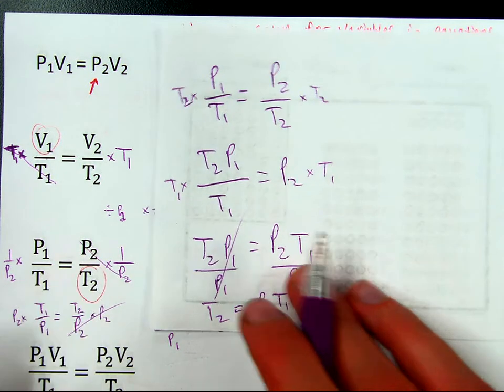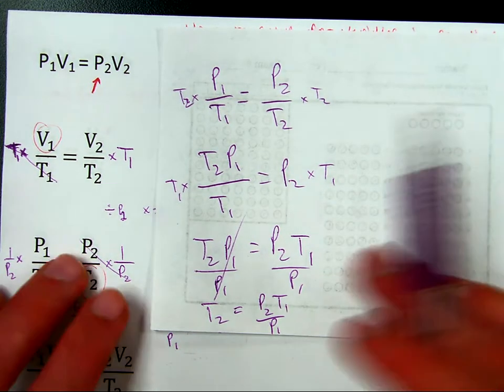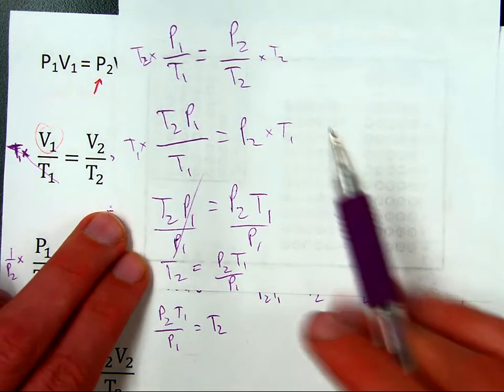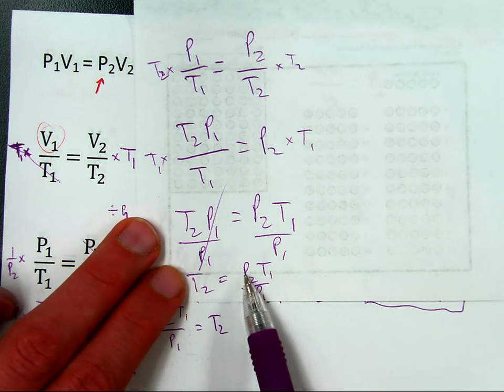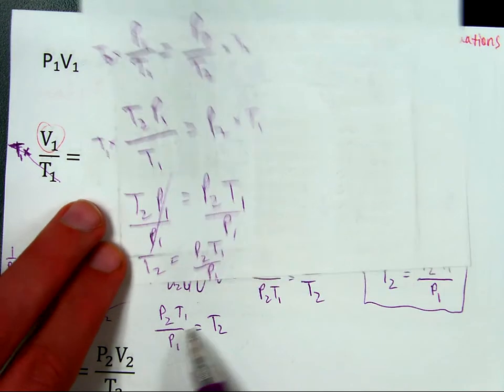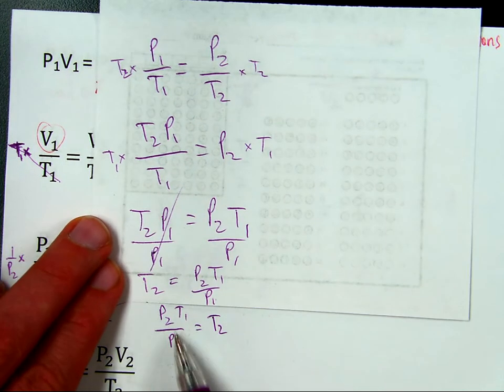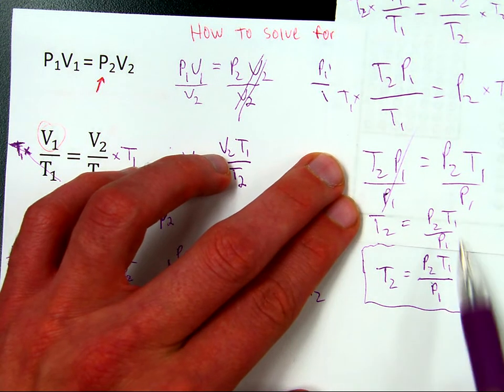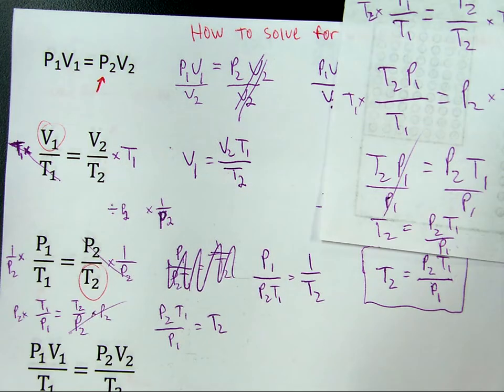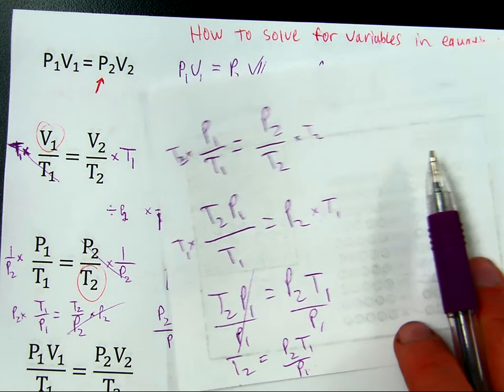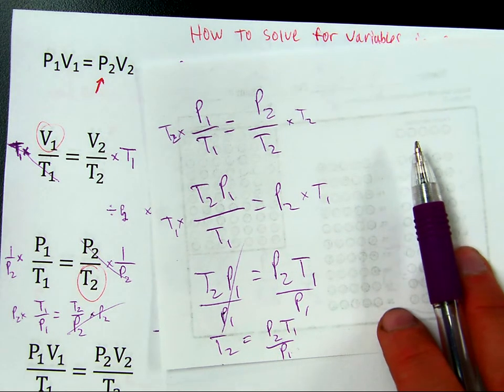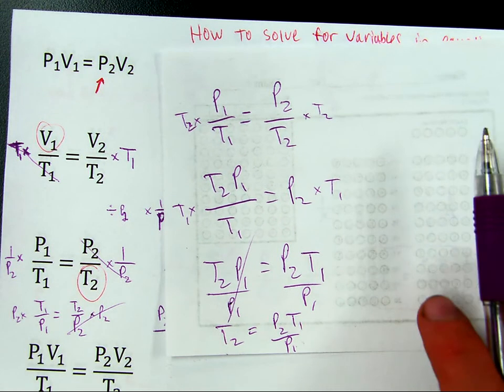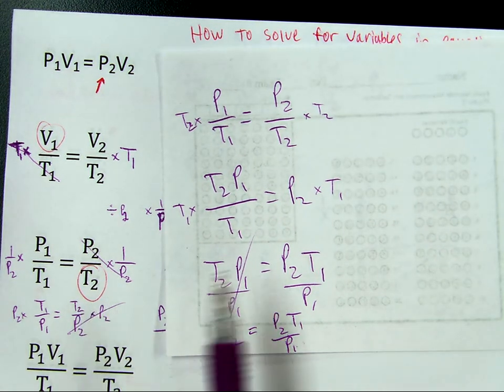But, I want to emphasize, even though I've just gone through three different ways to do the same thing. Look. The result of this, T2 equals P2, T1 over P1. It's the same as here. I've just got the same answer again. And, this also matches here. So, whatever way works for you is fine. It's a way that works for you. Because, in the end, it doesn't matter how you rearrange the equation as long as it's algebraically valid.